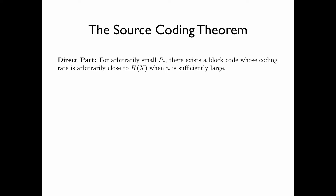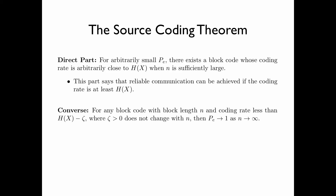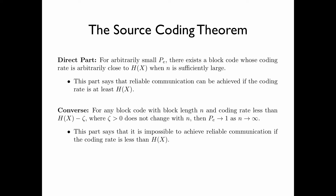The source coding theorem consists of two parts. First, the direct part says that for arbitrarily small error probability, there exists a block code whose coding rate is arbitrarily close to the entropy of x, when n is sufficiently large. This says that reliable communication can be achieved if the coding rate is at least equal to the entropy of x. The converse part says that for any block code with block length n and encoding rate less than H(x) minus zeta, where zeta is a positive quantity which does not change with n, the error probability tends to 1 as the block length tends to infinity. This says it is impossible to achieve reliable communication if the coding rate is less than the entropy of x.